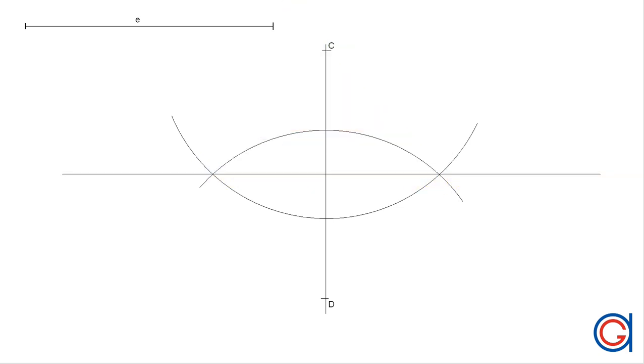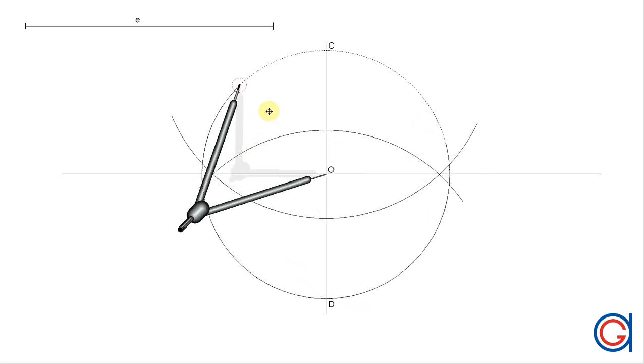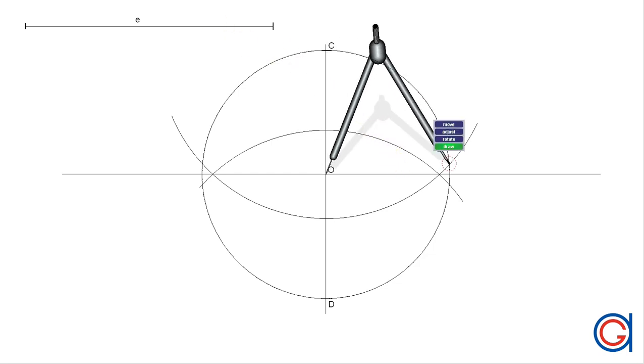Where the horizontal line cuts the vertical line is going to be the center point O of our circle, with a diameter equal to the minor axis E. This circle intersects the horizontal line at two points which we will call O3 and O4.